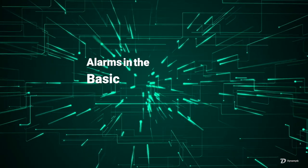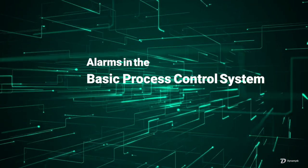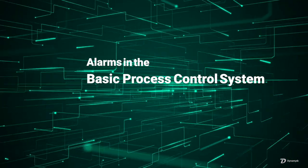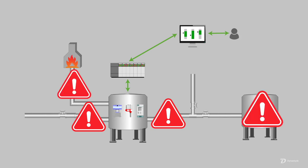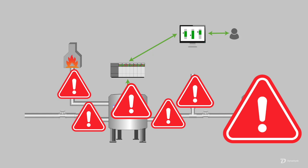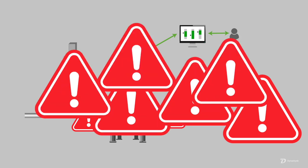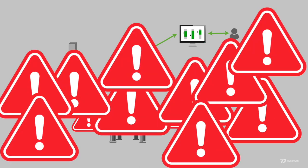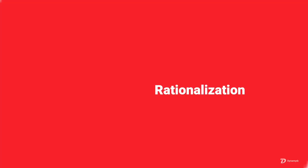Alarms — for example, alarms in the basic process control system. When a plant or section of the plant goes into a process upset condition, alarms start to ring into operations. The situation can easily cascade throughout the plant and be shown in the control system. One alarm turns into five alarms, turns into 20 alarms, turns into 200 alarms very quickly — we call this an alarm flood.